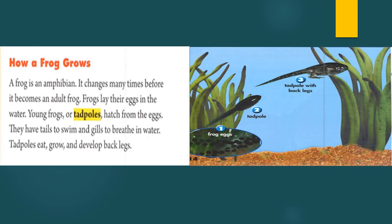How a frog grows. A frog is an amphibian. Amphibians are animals that can live in both water and land. They breathe with their gills when they are young, then breathe with their lungs when they become adult. It changed many times before it becomes an adult frog. Frogs lay their eggs in the water.